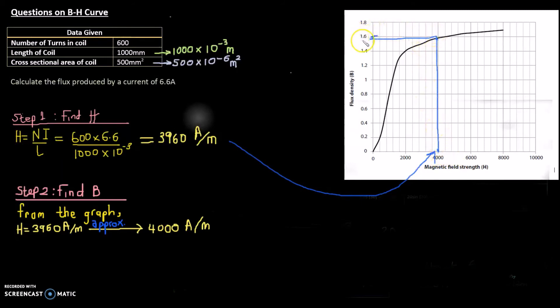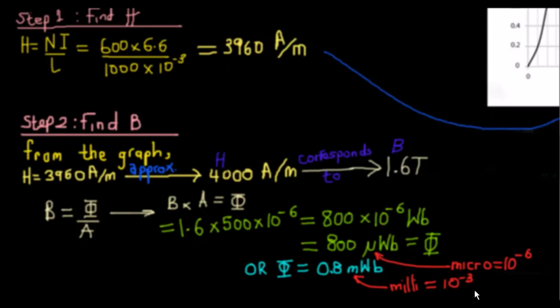As you can see, a magnetic field strength of 3960 would be approximately 4000, and that will correspond to around about 1.6 Tesla of flux density. To summarize, we have our H which we've calculated as 3960 amps per meter. We went to our graph, took the H on the x-axis, and because we couldn't read 3960 we approximated it to 4000, then we traced it up the graph and got 1.6 Tesla.